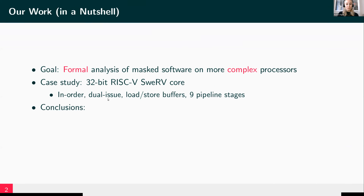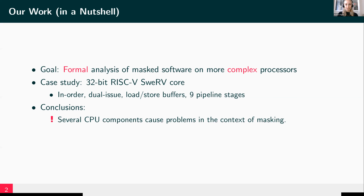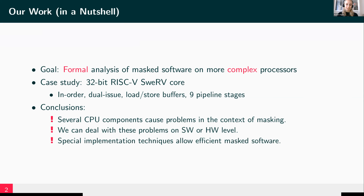The main conclusions of our work are: first, there are several components in the Swerve core which will cause problems related to masking. If we want to fix these problems, we can do that on hardware or software level. However, hardware solutions often have such a high latency that we cannot really implement them to be practical. If we fix that on software level, we will still get a high overhead, but now we can apply special implementation techniques which will allow us to have efficient masked software on our Swerve core or on any other complex processor.